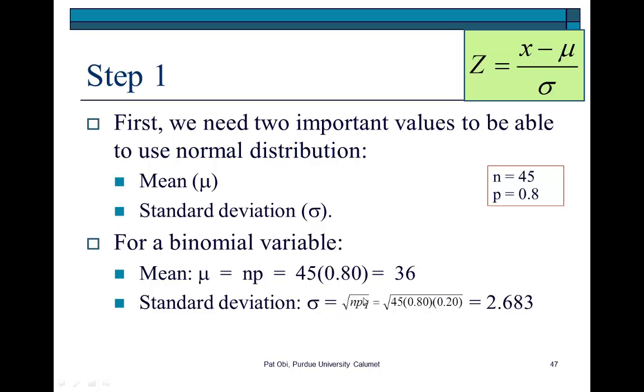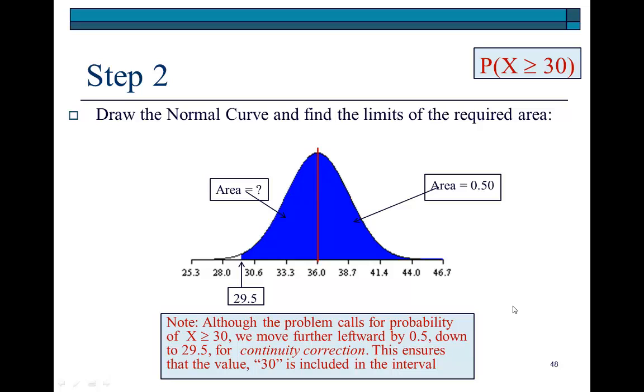And, standard deviation is the square root of npq, where npq itself is the variance. So here, standard deviation is 2.683. So, armed with these two pieces of information, we then proceed to step two, draw the normal curve.